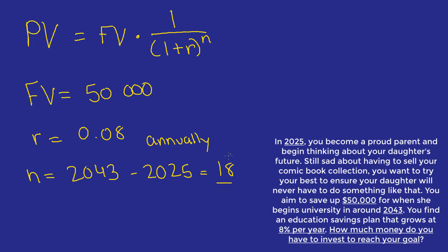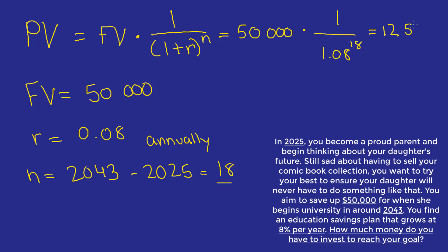Since this is an annually compounding rate, the number of years equals the number of periods, so we don't need to adjust. We plug the values in: 50,000 times (1 over 1.08 raised to 18). That gives us $12,512.45, which would be our initial investment.